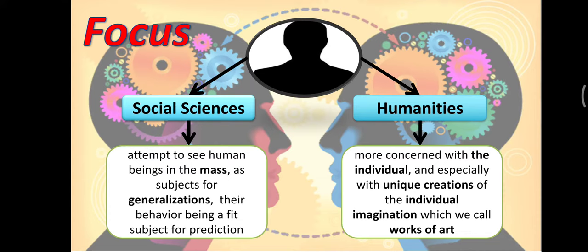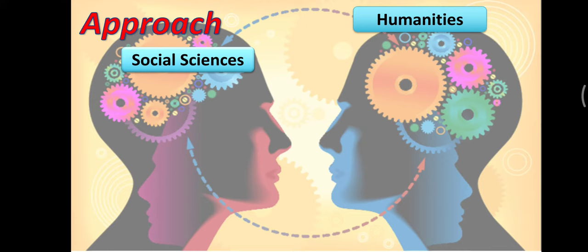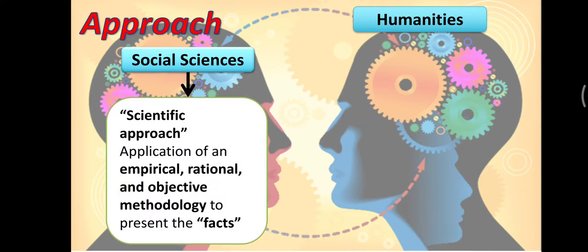The approach—let's see the difference. For social sciences, we have the scientific approach: application of an empirical, rational, and objective methodology to present the facts. Social sciences is really a science, so it's objective. We use objective methodology based on hypothesis, research, conclusions. We use empirical evidence to present facts using scientific method.